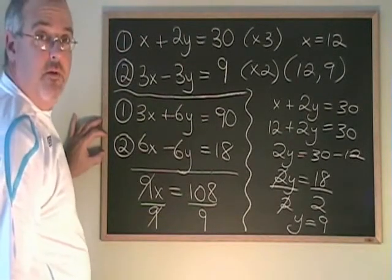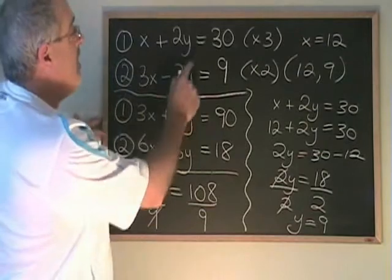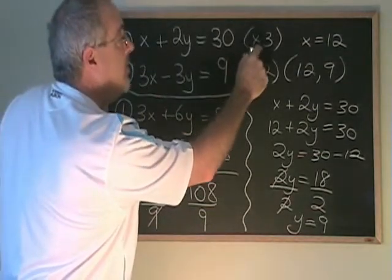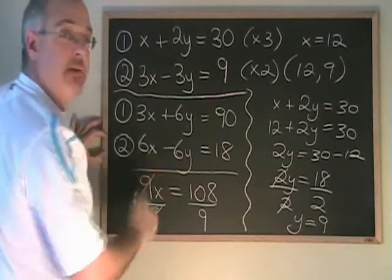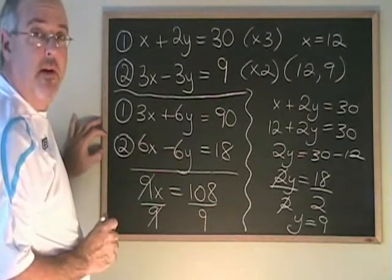When we're doing elimination through addition, even if we have to multiply both equations by two different numbers, we can create this equal and opposite situation, and we can continue on with our method.